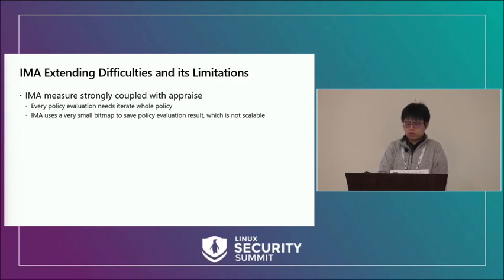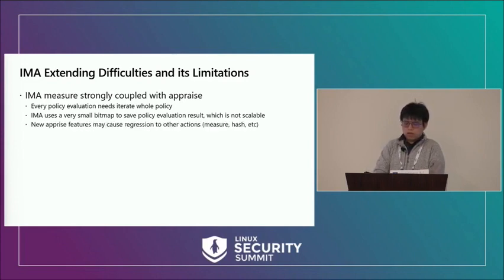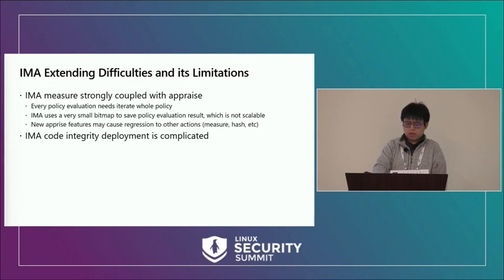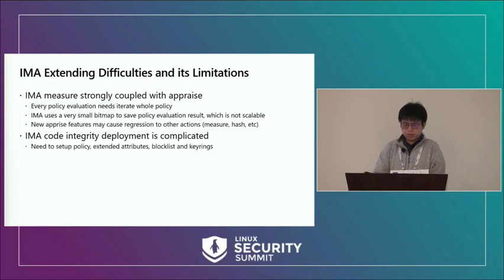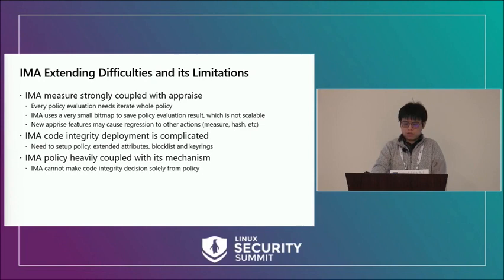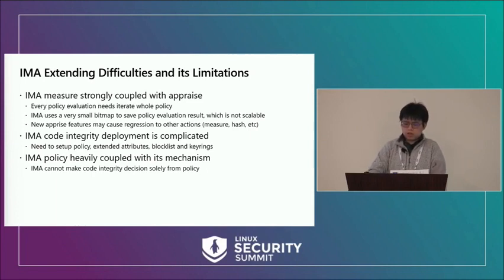IPE doesn't have this issue because its policy evaluation simply allows or denies the file. Also, all IMA actions happen inside a single function — `process_measurement` — and extending appraise makes this function more complex and may cause regressions. The second problem is that IMA's code integrity deployment process is complicated: not only does the policy need to be deployed, but the block list, extended attributes, and key rings also need to be configured. With IPE, all you need to do is deploy the policy. Furthermore, IMA's appraised decision cannot solely be determined by policy and is affected by other factors, which is a headache for administrators troubleshooting failures.